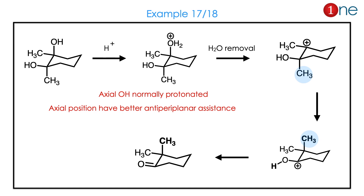Let us look at the next question. You have acid and water removal. Protonation occurs at the axial position because the axial position has better periplanar arrangement — this is the anti-position. The anti-group migrates as water is removed. Here, the anti-group is the methyl group, not the ring methylene. So the ketone forms within the ring. Axial hydrogen is normally protonated; the axial position has better periplanar arrangement.